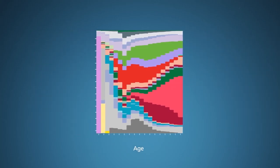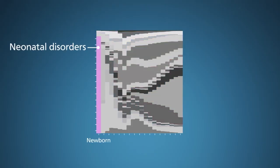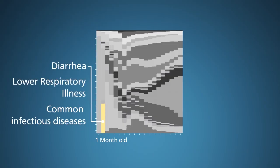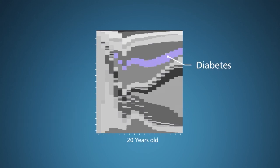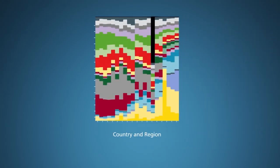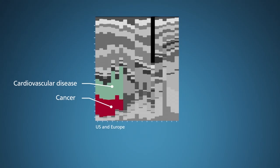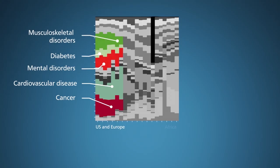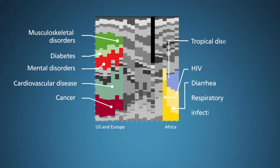For example, here you can see the distribution of DALYs by disease and age. In newborns, most DALYs are due to neonatal disorders. For one-month-olds, diarrhea, lower respiratory illness, and other common infectious diseases cause the greatest burden. Diabetes extracts a steady toll starting in the 20s. Cardiovascular disease takes off quickly from age 30. Similarly, in this graph, you can see how disease burden varies by geographic region. On the left are wealthier countries with the largest burden from cardiovascular disease and cancer, and secondarily from musculoskeletal disorders, diabetes, and mental disorders. On the far right are African regions with the highest burden from HIV, diarrhea, respiratory infection, tropical diseases, and neonatal disorders. You can find more DALY-based graphics in a special December 2012 issue of Lancet and online at the Institute for Health Metrics and Evaluation website.